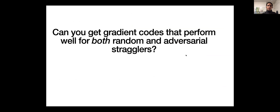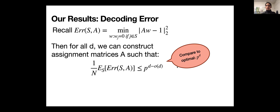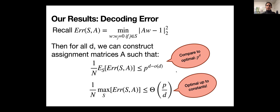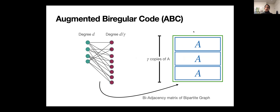Our results: we construct assignment matrices where the random error is approximately p^{d - o(d)}, which is almost optimal, and in the adversarial case we achieve error on the order of p/d.